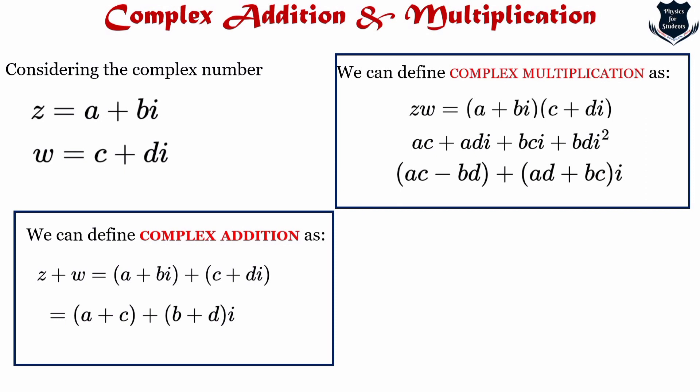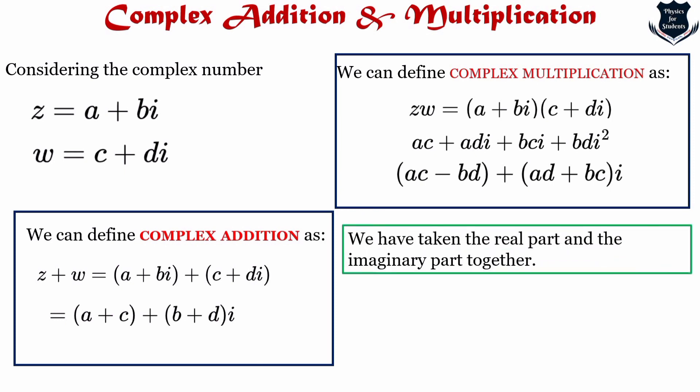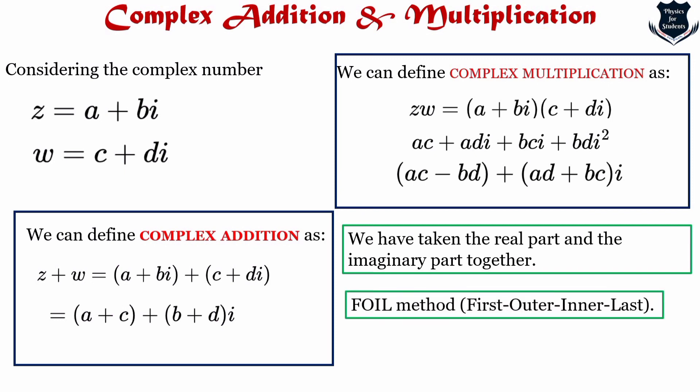In this last step, we gather the real part and the imaginary part together. The method used for multiplying two complex numbers is also referred to as the FOIL method — First, Outer, Inner, Last. This is how we define complex addition and complex multiplication.